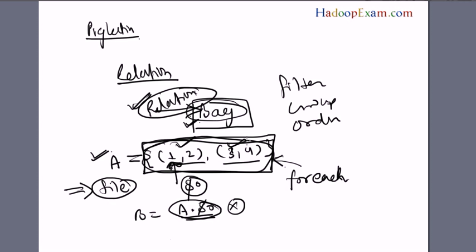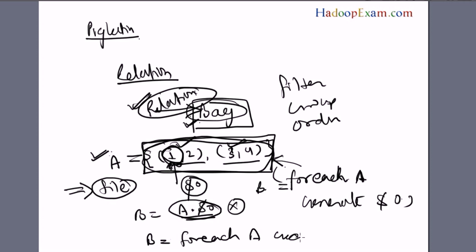For each of the A relations, generate dollar zero. What exactly it does is pick up the first dollar zero value and assign it to B. The statement becomes B equals for each A generate dollar zero. This way you can actually create a new relation out of this. This is called working on relations in Pig Latin.